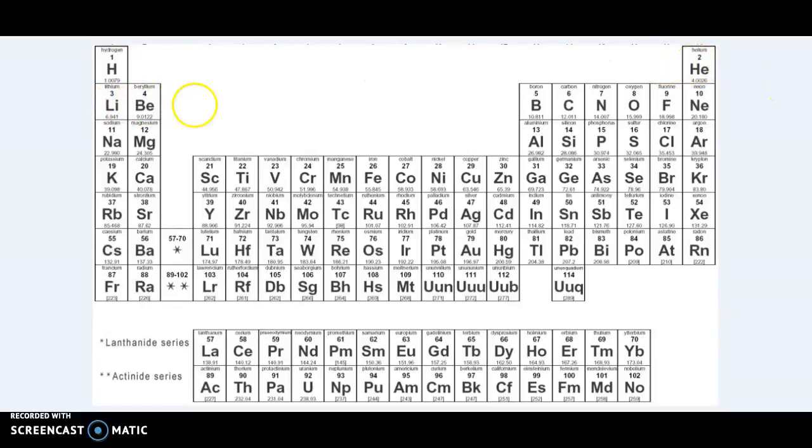1s2, 2s2, 2p1. The outer shell then will have two in the s, one in the p, that's three in the outside shell. How many electrons does every element in the periodic table really want to have in the outside shell? Eight. That's right.